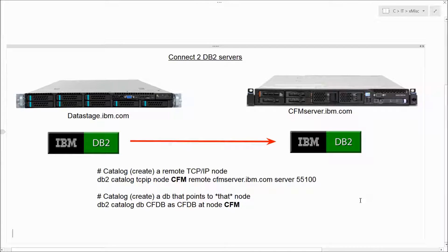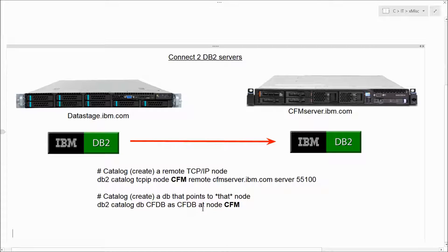You can't really do anything with that unless db2 has a database as well. So the second thing we need to do is catalog or register a database - and that's a special database. Notice we're not doing a create database command, we're cataloging it. We're going to do: db2 catalog database, and we'll call that database CFDB - which is the counter fraud database name. The 'as' indicates what follows will be an alias; we'll keep it simple and use CFDB as well. Then we give it the name of the node we created previously, which was CFM.